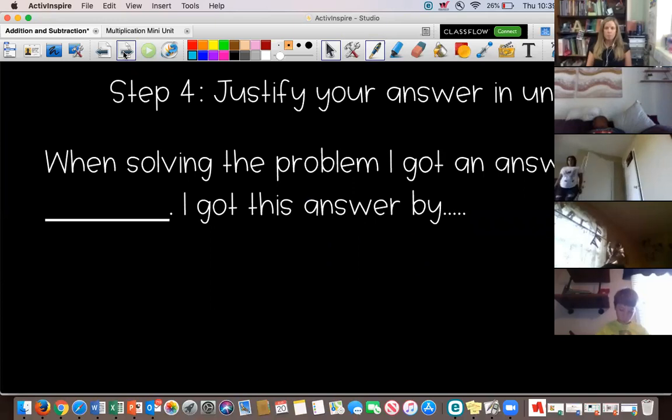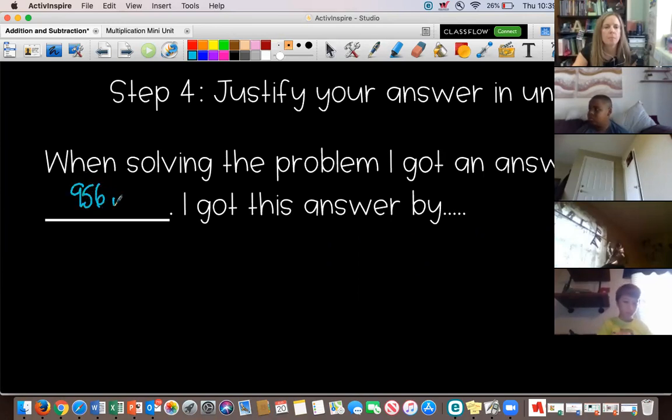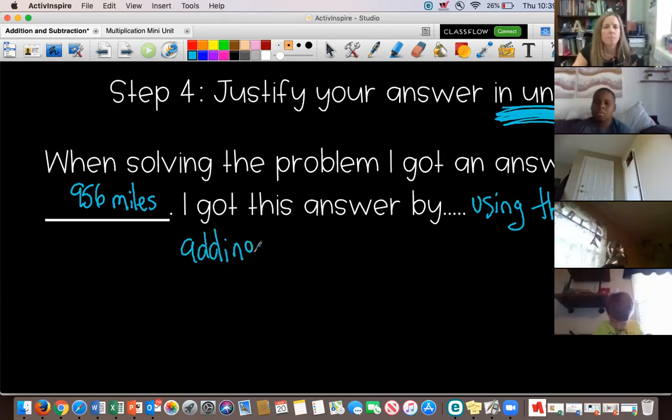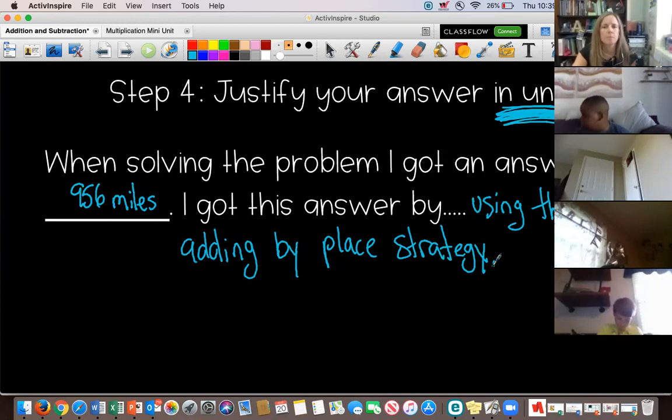And lastly, I'm going to justify my answer with units. And I have a sentence stem that I'm going to use, which is, so I've got to move my video out of the way for a second. When solving the problem, I got the answer of 956 miles. And I'm not just writing 956. 956 miles, because I need to say with units. Answering with units, where it says in units right here, that means what am I measuring in? I'm measuring in miles. I got this answer by using the adding by place strategy. All right. And now, I'm completely done. I figured out the answer. I've given it in units, and I've justified what I did to solve the problem. Now, I finished.